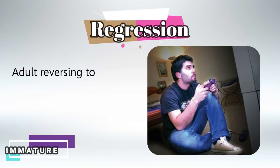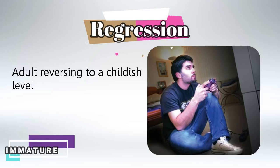Regression is different from fixation, and it's very important to know the difference. Regression is when an adult who has grown up from being a child then, after having very strong stress in his life, goes back to behaving like a child. Unlike fixation, in regression there was a period in his life in which he was functioning as an adult.